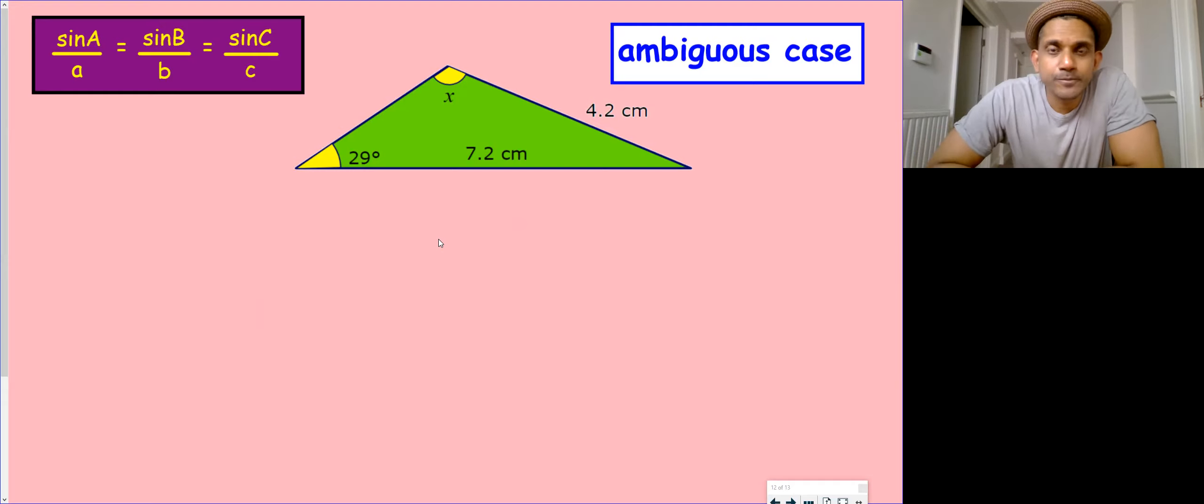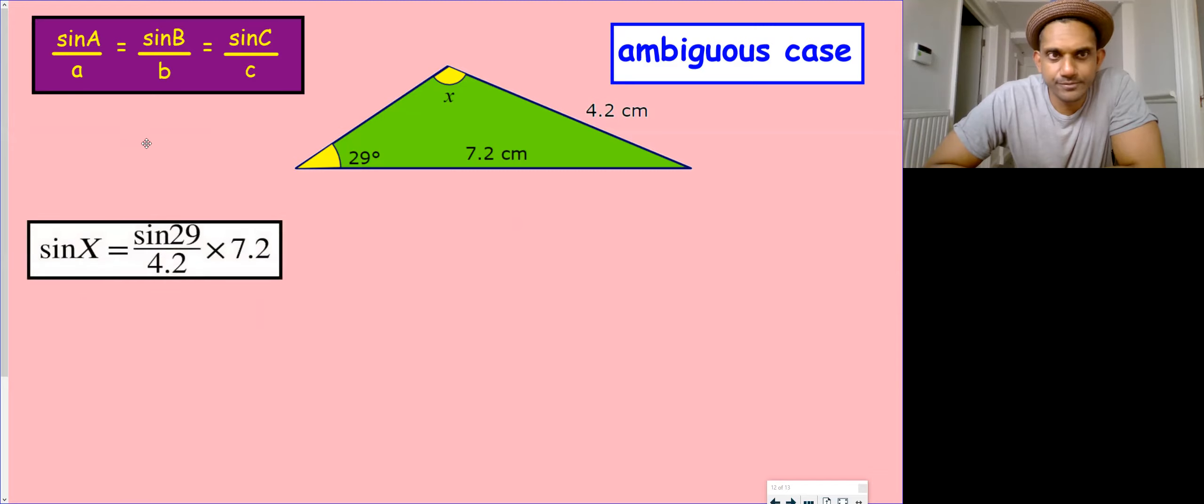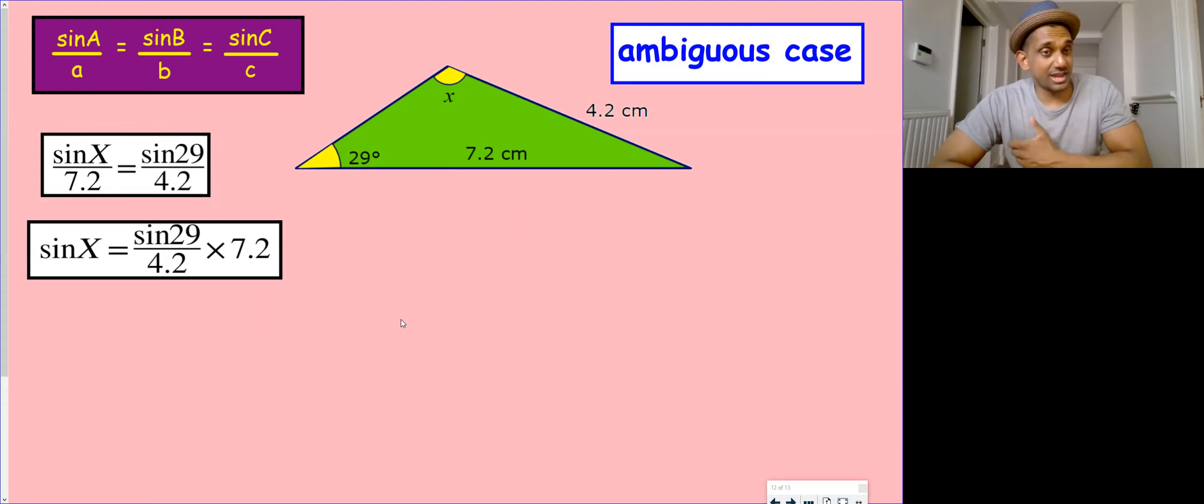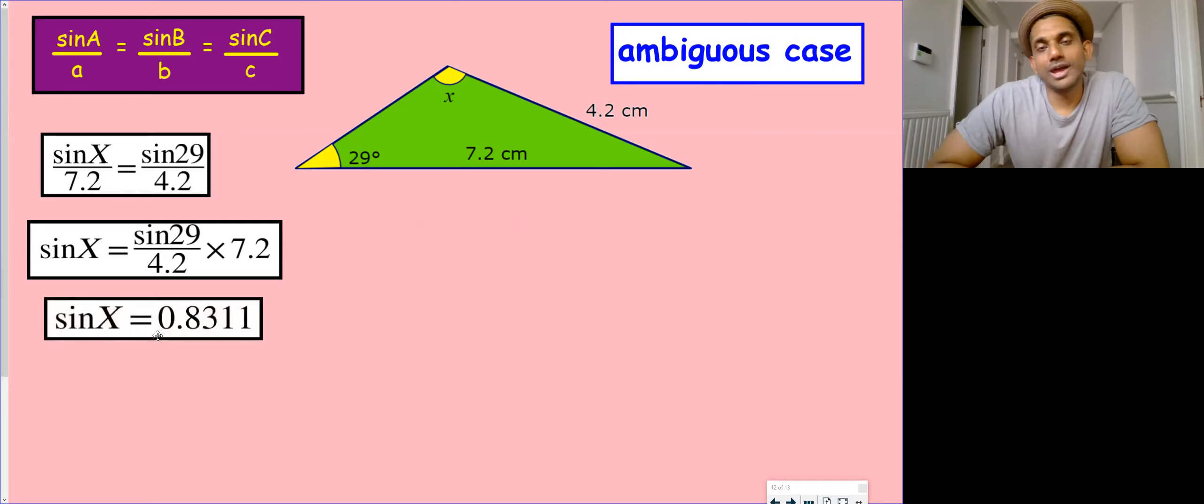Welcome back. So let's get rid of that one. No, I've not got a fade there, so silly me. So we've got sine X over 7.2 equals sine 29 over 4.2. That's the first one. Obviously faded them in at the wrong time. Then the opposite divided by 7.2 is timesing. And we do that, we do shift sine...